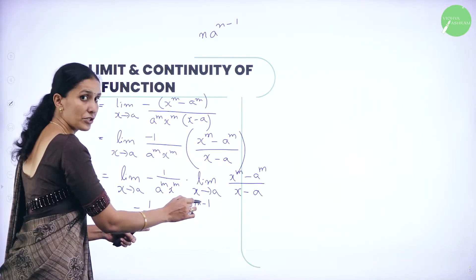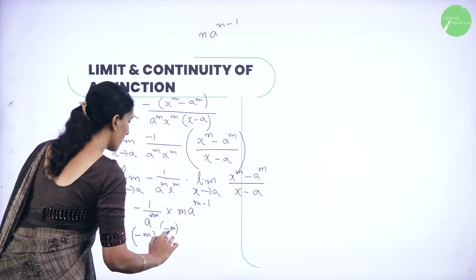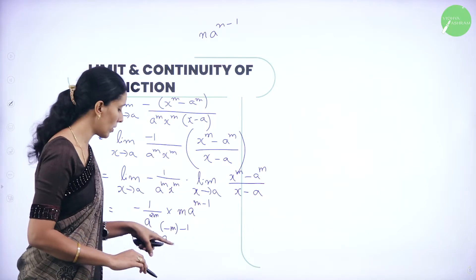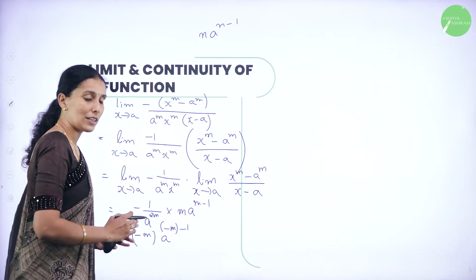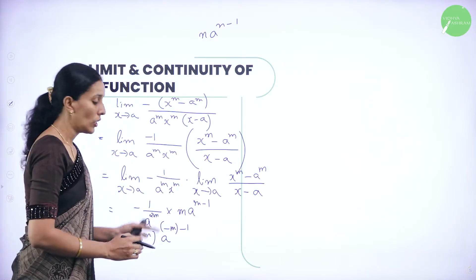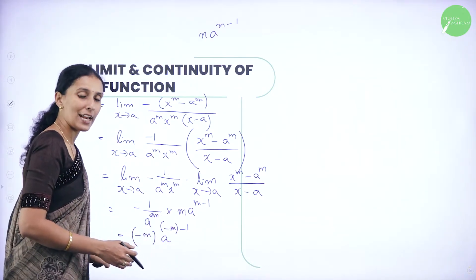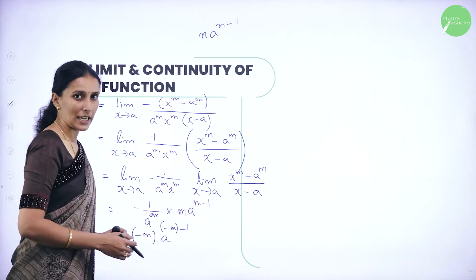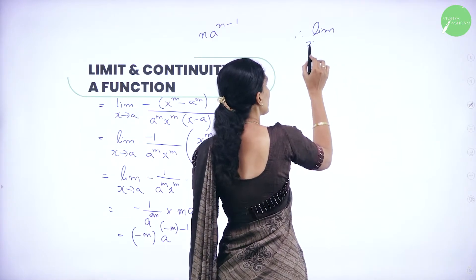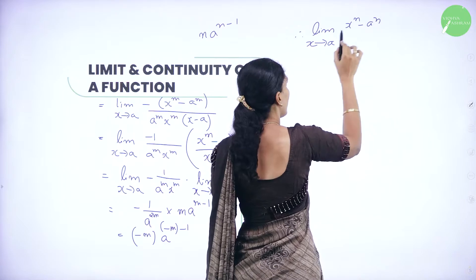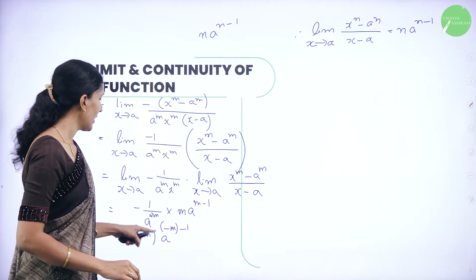When a power 2m is shifted to the numerator, we get minus m into a power m minus 2m, which simplifies to a power minus m minus 1. Since we replaced n as minus m, this is of the form n into a power n minus 1. So for Case 2, whenever n is negative, we again conclude that limit x tends to a of x power n minus a power n divided by x minus a equals n into a power n minus 1.